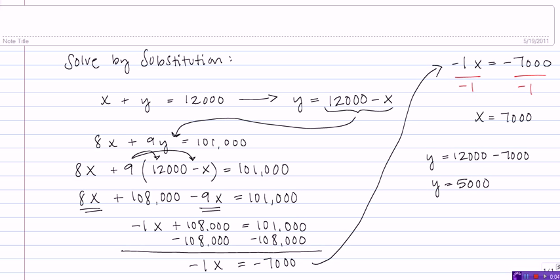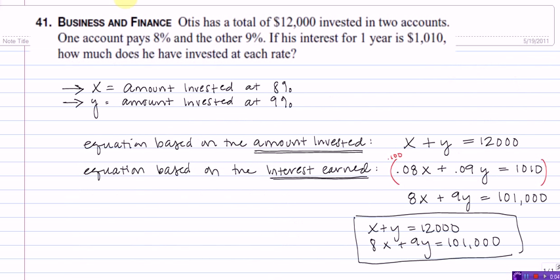Now, let's go back to the original problem and make some sense out of these values, X equals 7,000 and Y equals 5,000. We got a result of X equaled 7,000 which represented in our statement here that X was the amount invested at 8%. So, the amount of money that Otis invested at 8% is going to be $7,000.